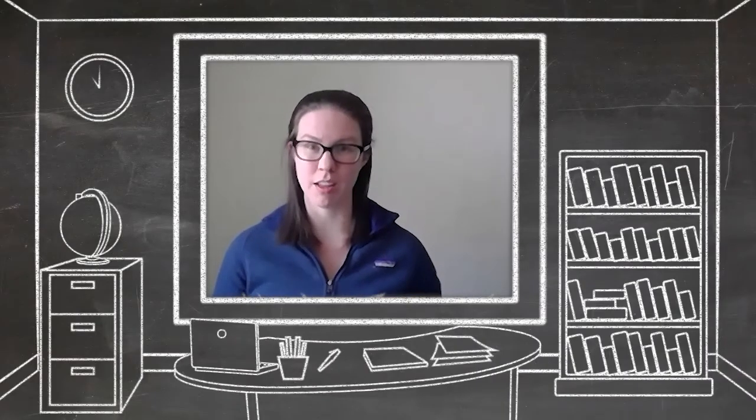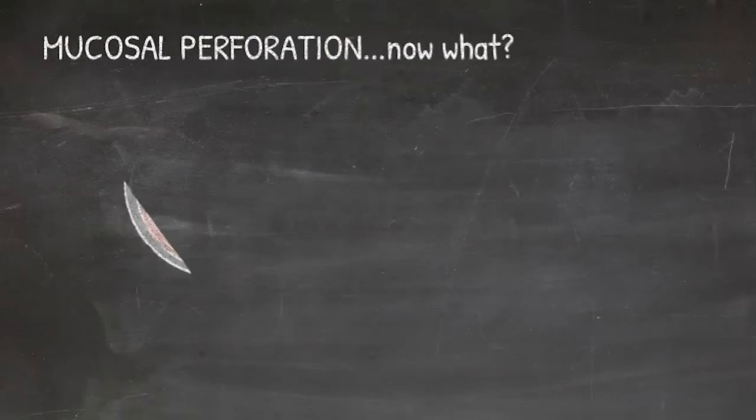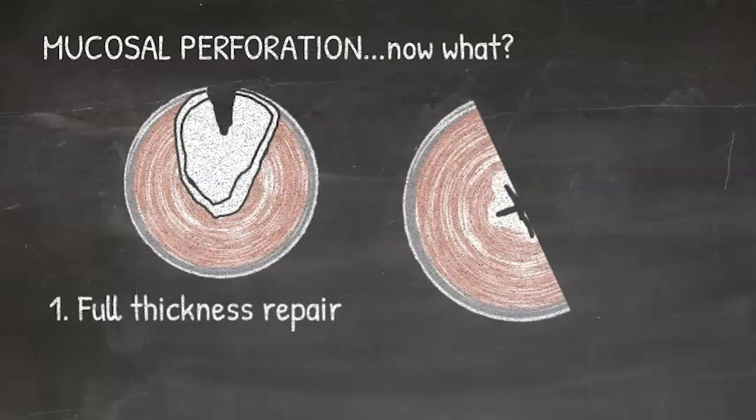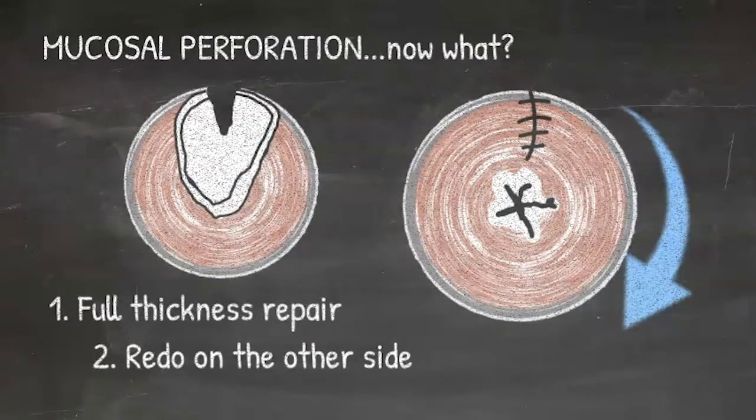While doing the pyloromyotomy, you perforate mucosa. What do you do? Depending on the extent of perforation, you can either close the mucosa, typically using a low-profile needle and a suture like a 5-0 Vicryl on a TF needle, or you could perform a full thickness repair of the myotomy and redo a myotomy about 180 degrees from the first one, usually on the posterior wall of the pylorus. When this happens, usually an NG tube is left in place for a day or so, and upper GI can also be performed based on surgeon's discretion.